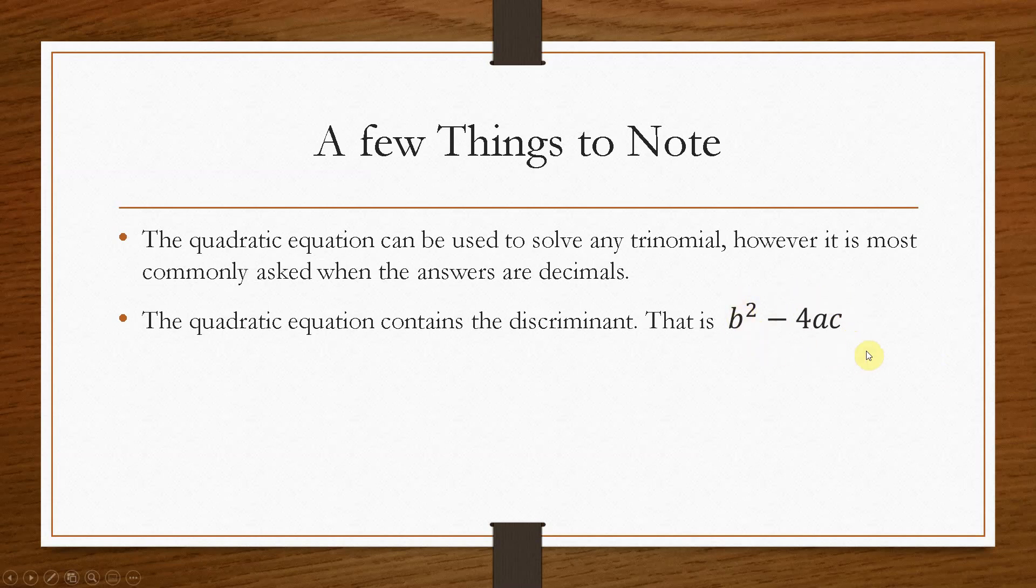And I'll add a link in the description to how to use the discriminant. Because this will give you a hint and a clue as to what you can expect your final answer to be. And also some characteristics for drawn quadratic graphs.